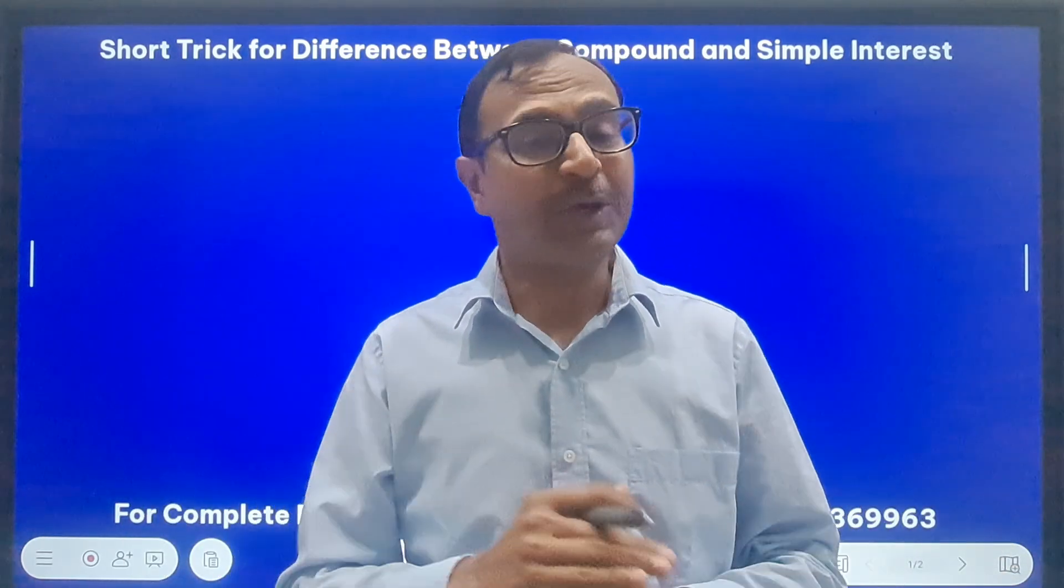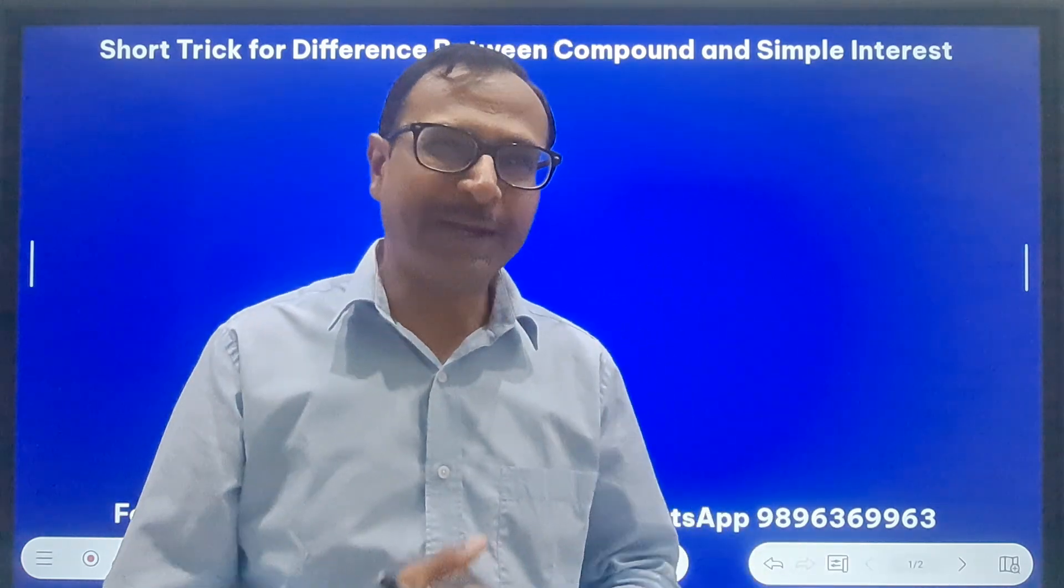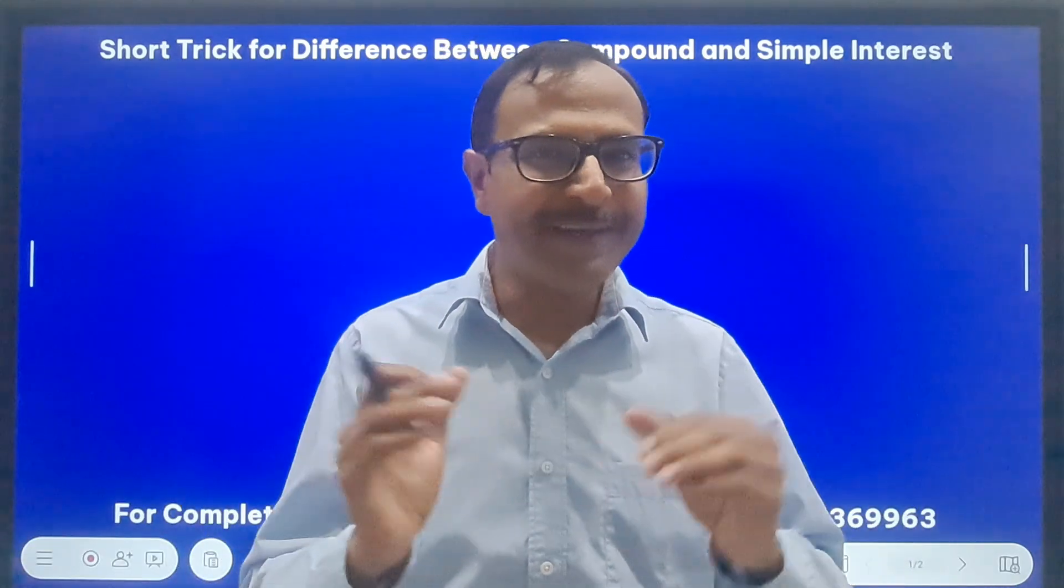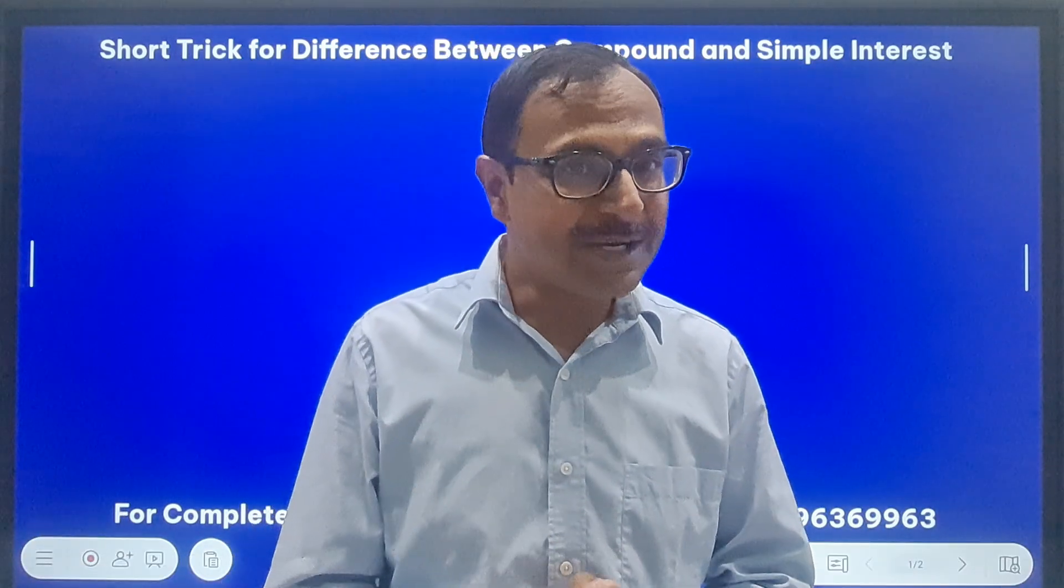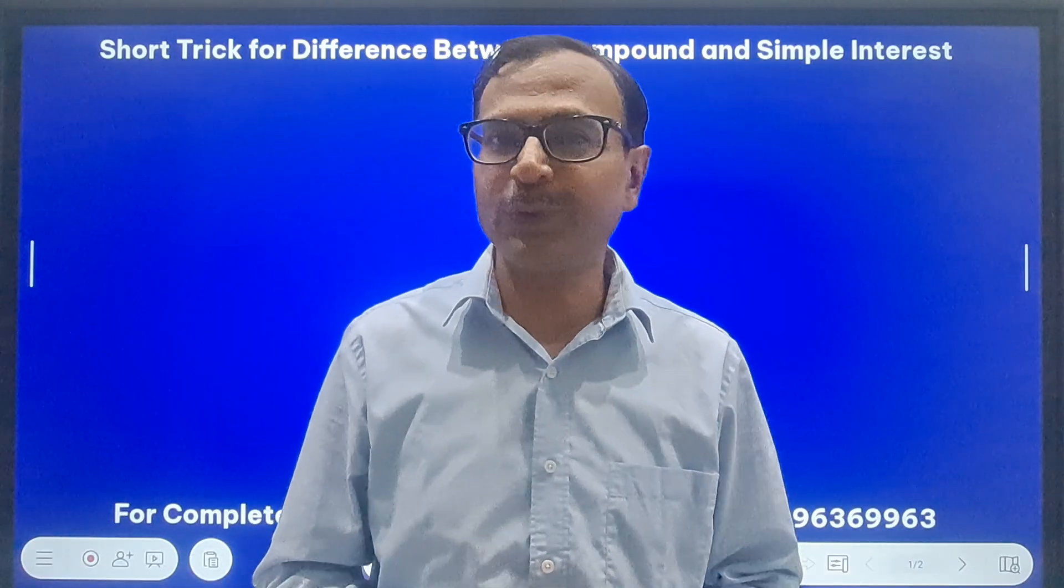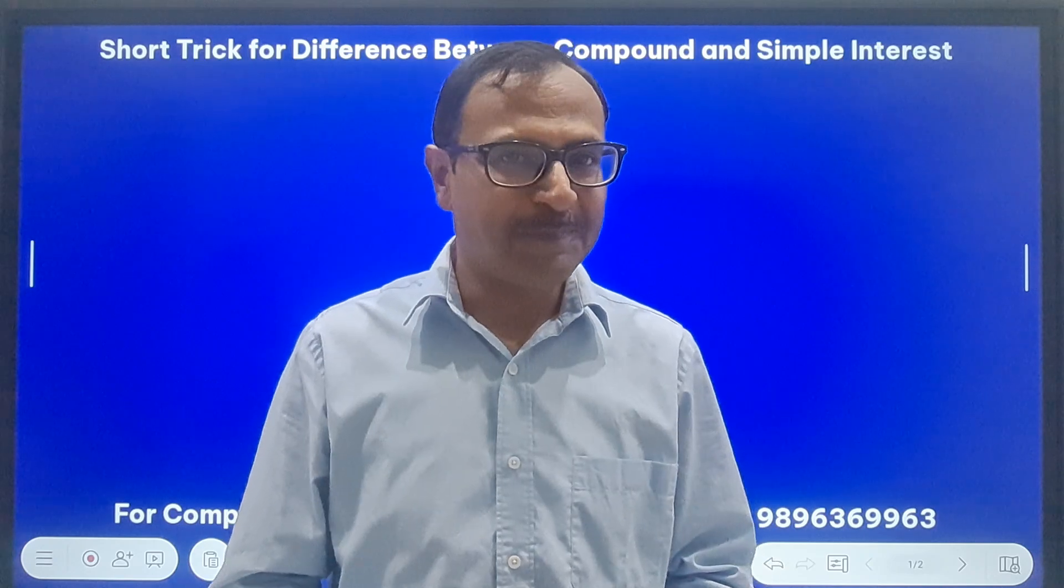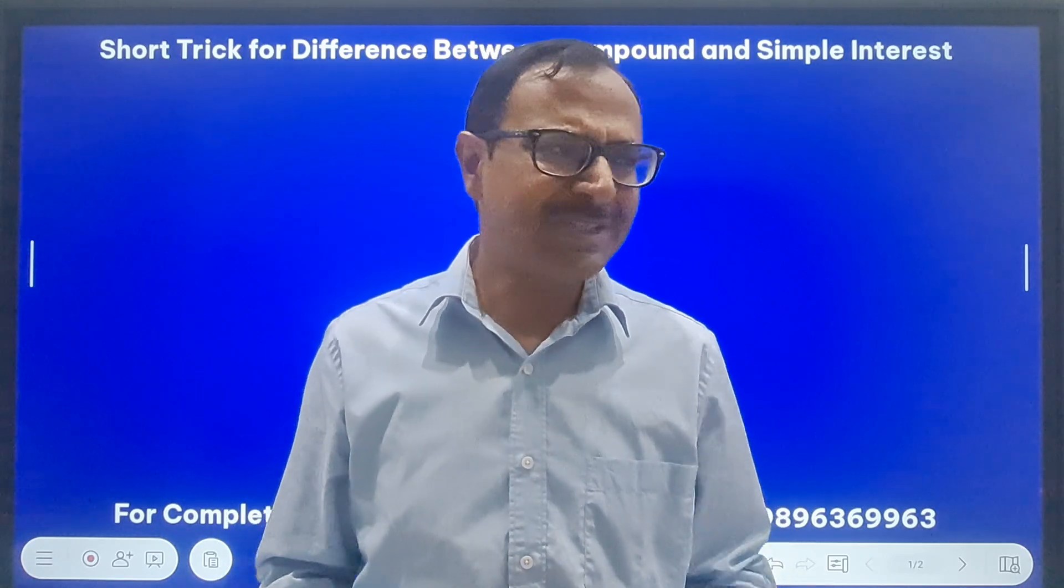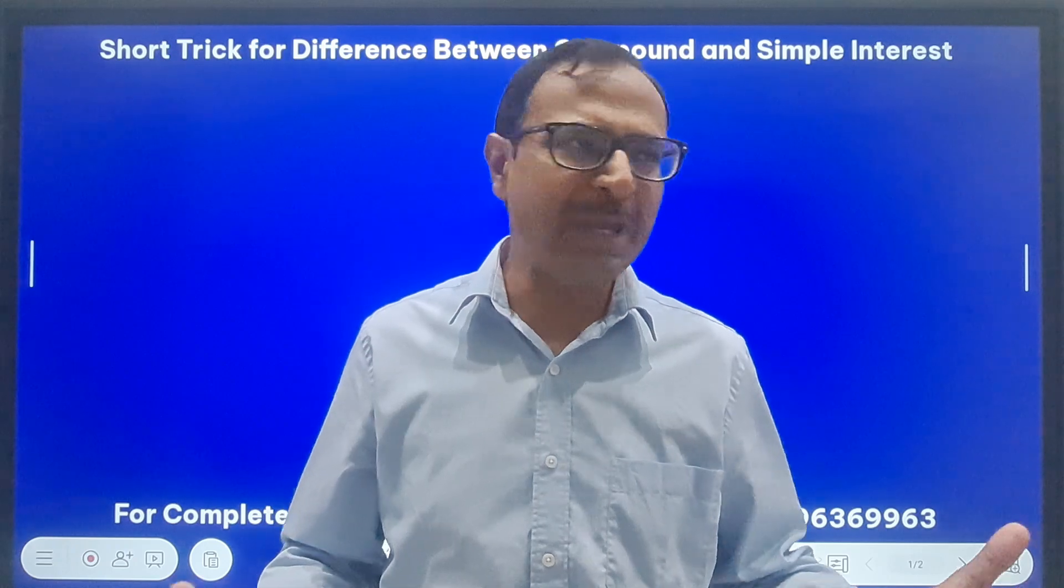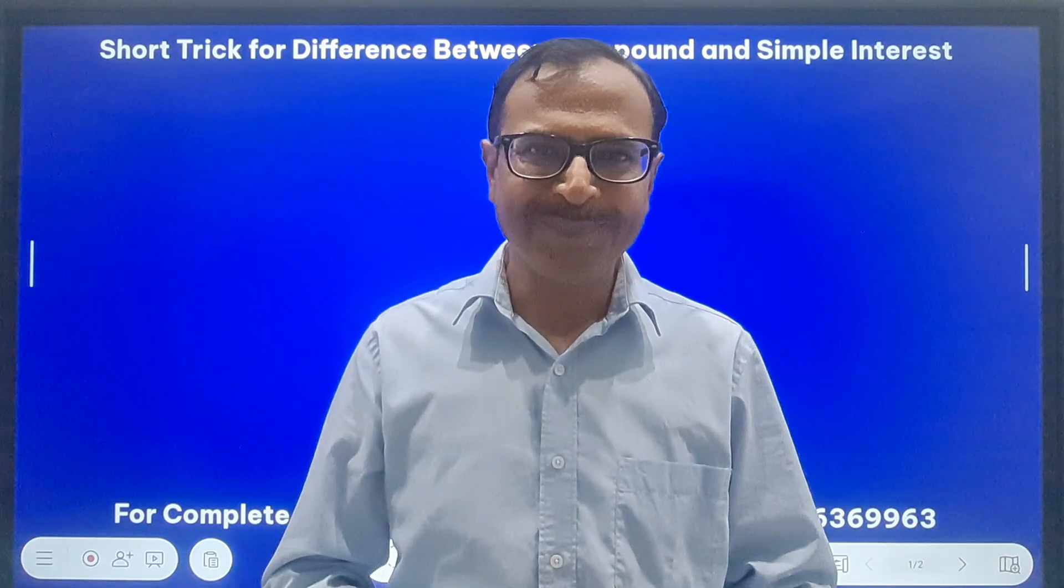You remember the questions which are based on the difference between CI and SI. What if I tell you that the traditional method is going to consume 3 to 4 minutes for the question to get solved, and the short trick you can do mentally in, depending on your speed, maybe a maximum of 10 seconds. Yes.